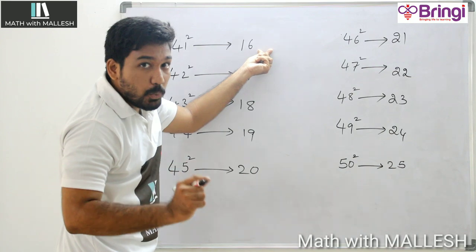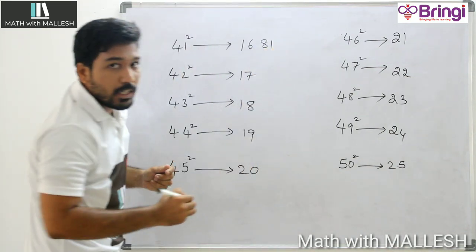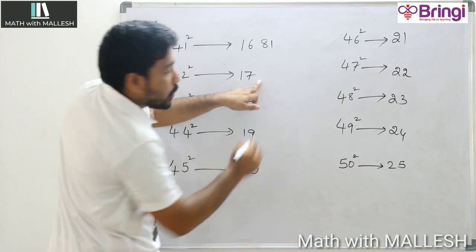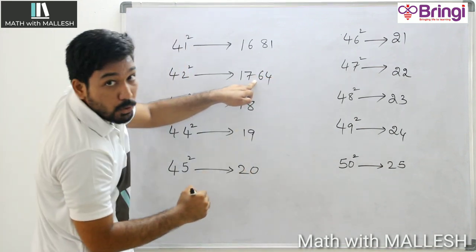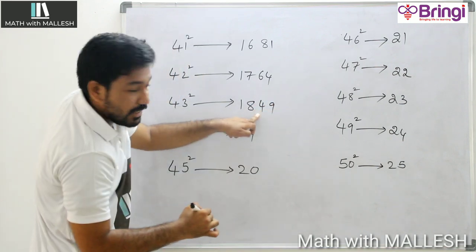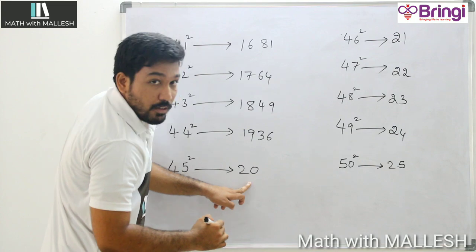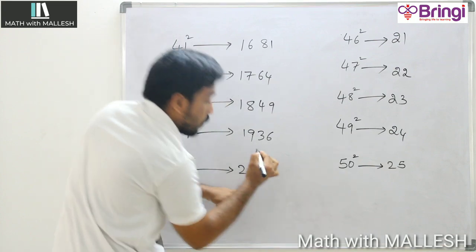Now here 9 square, 9 square value is 81. 8 square is 64. 7 square is 49. 6 square is 36. 5 square is 25.